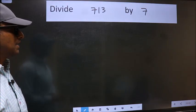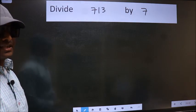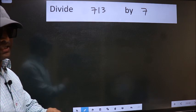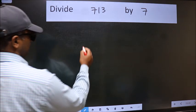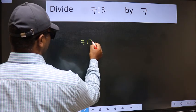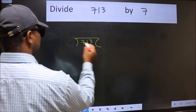Divide 713 by 7. To do this division, we should frame it in this way: 713 here and 7 here.